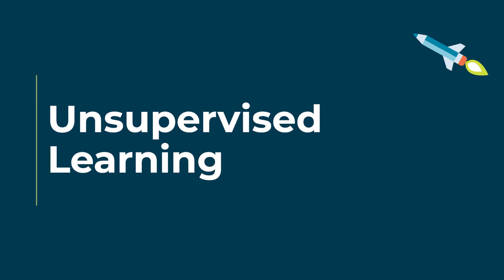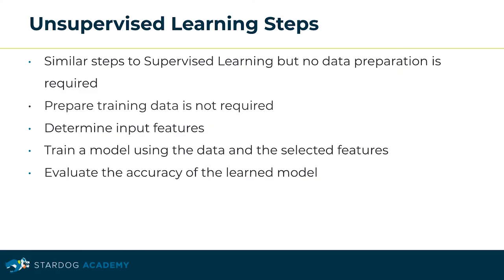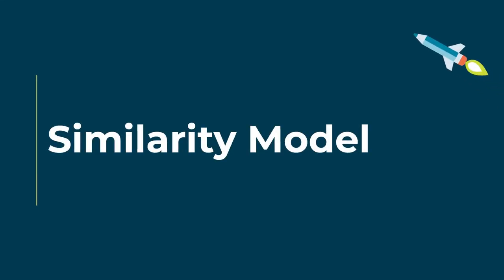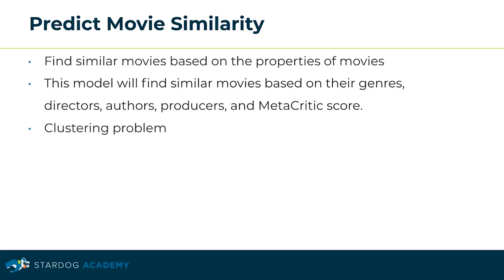We have discussed a number of examples using supervised learning. Let's now deep-dive into unsupervised learning. Unsupervised learning follows similar steps to supervised learning, but no data preparation is really required — the first step is not needed. We still have to determine input features, train the model using the data and selected features, and evaluate the accuracy of the learned model. We will use a similarity model use case example based on our movies dataset. A simpler and unsupervised way of generating movie recommendations would be finding movies with similar features, which can be achieved by using a similarity model.